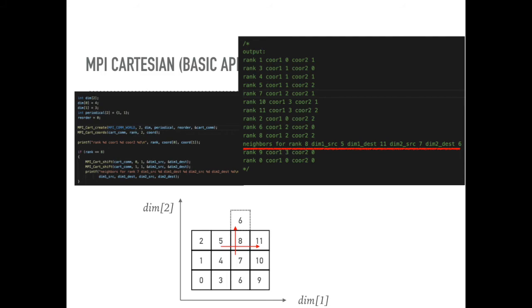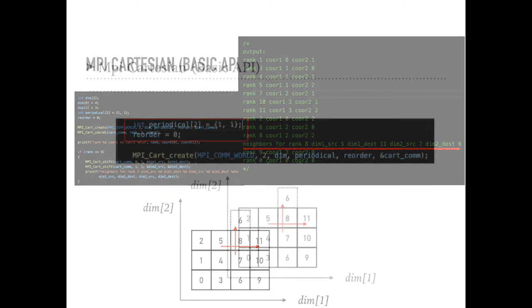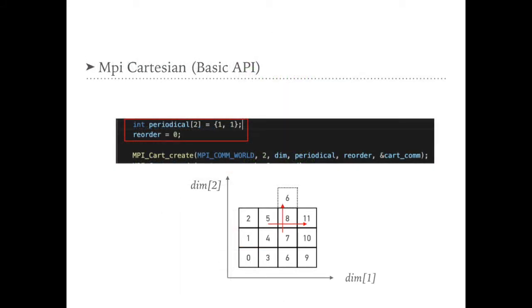Let's go back to MPI Cartesian create. There is an important parameter called periodic. If we set the value for periodic array as 1 for specific dimension, it means that the next value of the boundary case will jump back to the first value.